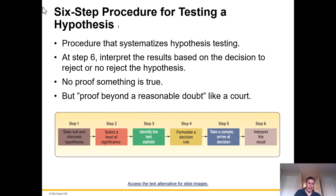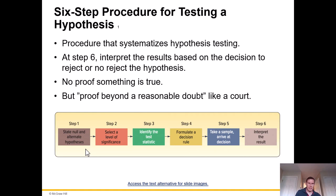There is a six-step procedure for testing a hypothesis — used in research the world over, in any subject. Step one: state the null and alternative hypothesis. Step two: select a level of significance. Step three: identify the test statistic. Step four: formulate a decision rule. Step five: take a sample and arrive at a decision. Step six: interpret the results based on the decision to reject or not reject — kind of like a court, proof beyond a reasonable doubt.